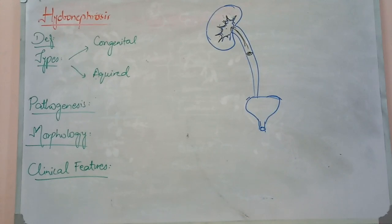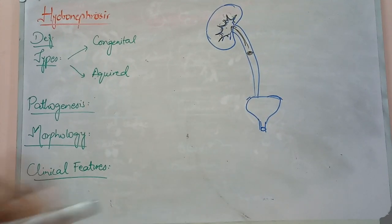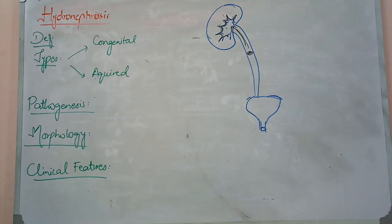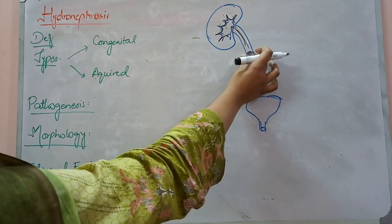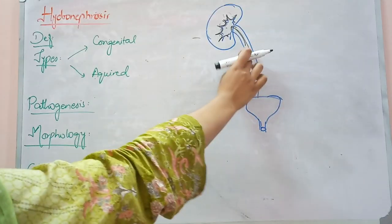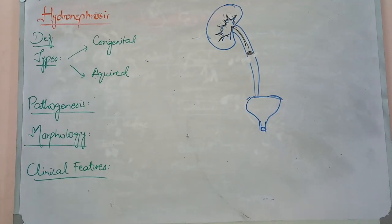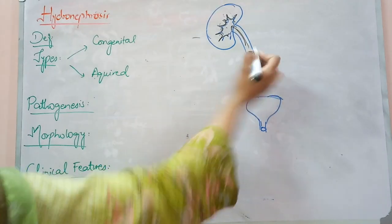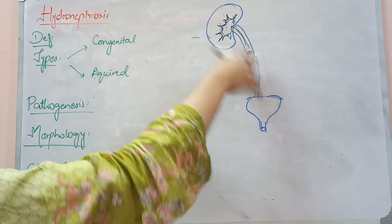Congenitally, it may also be that a renal artery compresses the ureter. If the renal artery is in a certain position, the ureter will be closed off, and backflow pressure will increase. There may also be torsion in the ureter, or the ureter may be kinked — formed in an abnormal shape. So these are the congenital causes.